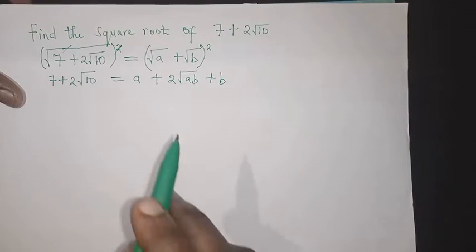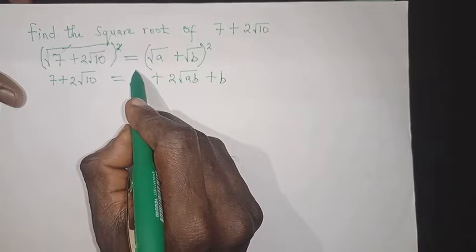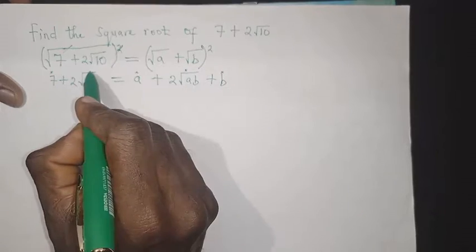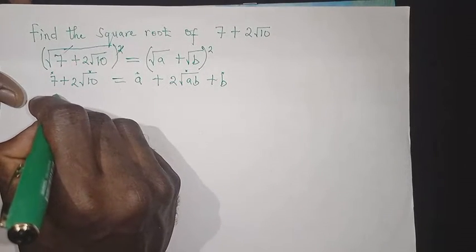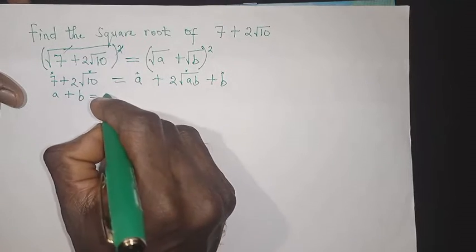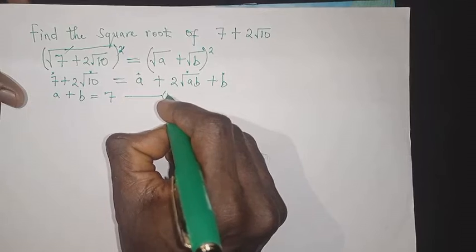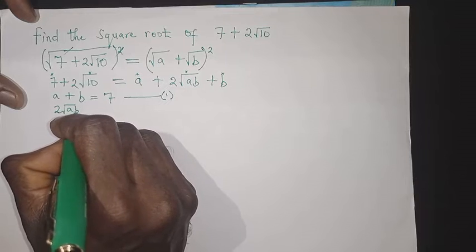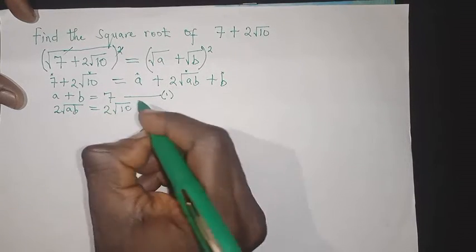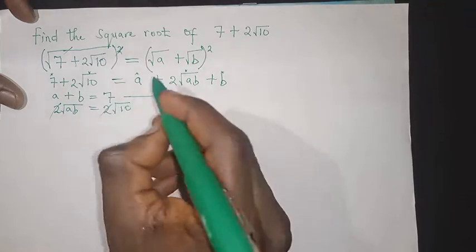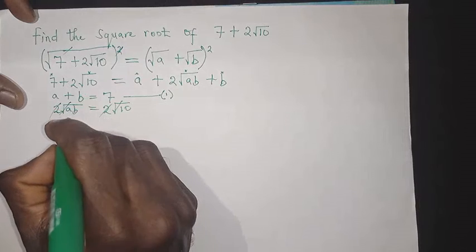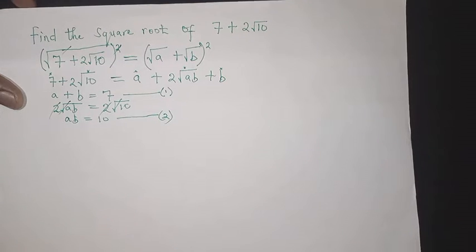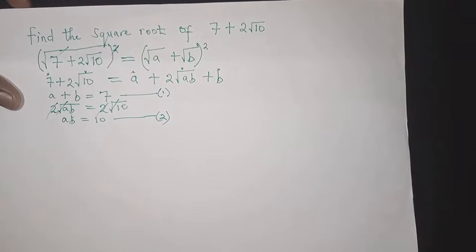Now if you notice, we can compare coefficients because this term looks like this term. So I'm going to equate them. I'll say a plus b equals 7 — that's equation 1. Then 2 root ab equals 2 root 10, and cancelling the 2's and the square roots gives ab equals 10 — that's equation 2.